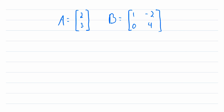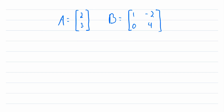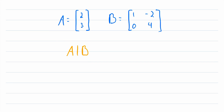An augmented matrix is created by joining the columns of two matrices. So we could augment our matrix A with matrix B. If we were to write that, it would look like this: A, then a vertical line, and then B. And if you're doing any other matrix operations with this augmented matrix, it would be smart to put it in parentheses.